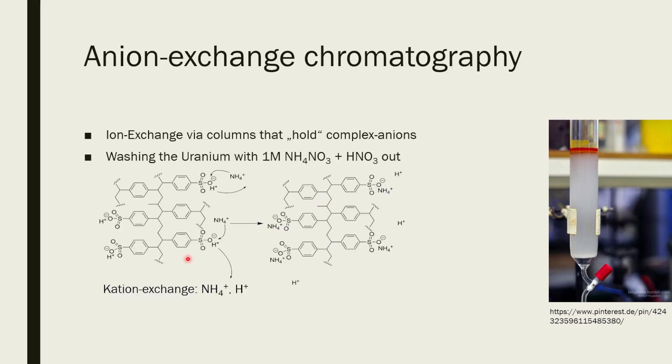They look something like this. So it's a polymer with acid groups on it. Used here is a cation exchanger where you exchange ammonium ions for protons from the acid groups. But you can also use an ion exchanger, for example, here. So you will put all of your acid solution onto this anion exchanger. And this anion exchanger will only hold the complex ions, which is the uranium.